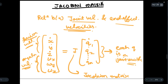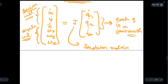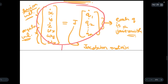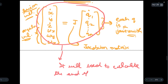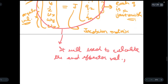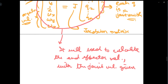We are going to use this whole arrangement to calculate the end effector velocities with the joint velocities given. That is, we will be calculating the end effector velocities when the joint velocities are given to us.